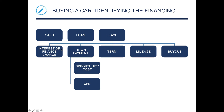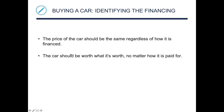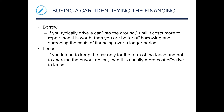For leasing, you have interest or finance charges, a down payment — for example, $3,000 down and $200 a month — an opportunity cost, annual percentage rate, terms, mileage restrictions, and a buyout option. The price of the car should be the same regardless of how it's financed — the car should be worth what it's worth no matter how it's paid for. If you typically drive a car into the ground until it costs more to repair than it's worth, you're better off borrowing and spreading the financing cost over a longer period.